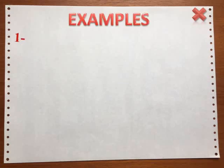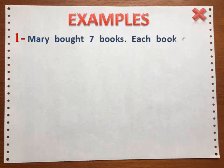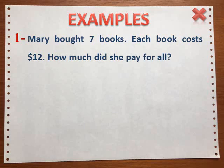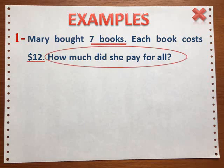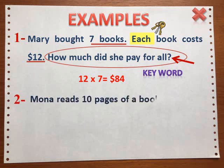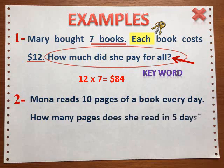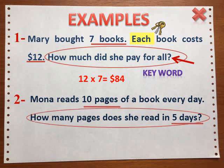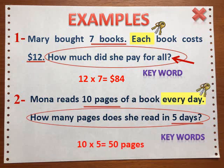Examples: Mary bought seven books; each book costs 12 dollars — how much did she pay for all? We have the keyword 'each' and are being asked about 'all', so we are going to use multiplication. Mona reads 10 pages of a book every day — how many pages does she read in five days? We have the keyword 'every day', so we are going to use multiplication.